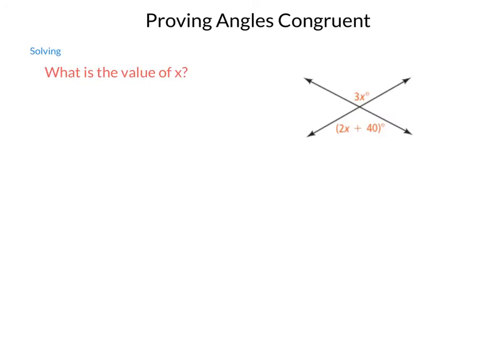First, let's just solve for the value of x. In the diagram, we do have two lines that intersect each other to form four angles.